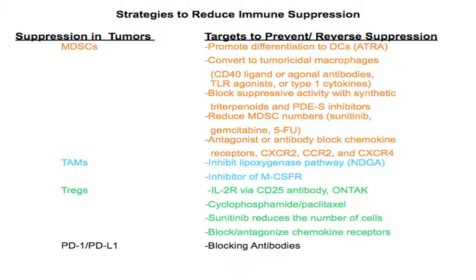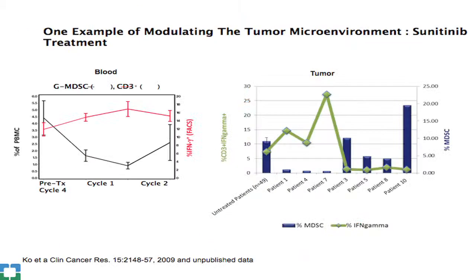There are now many different strategies being explored to reduce MDSCs, TAMs, and Tregs. It will be interesting to see the effect of combining these approaches with vaccines and other immunotherapy strategies. One specific example of modulating the tumor microenvironment is sunitinib.